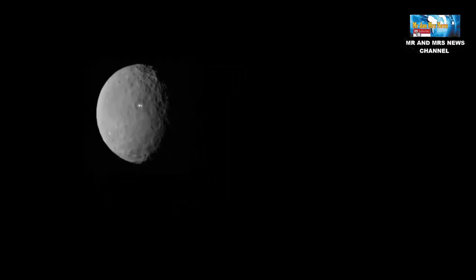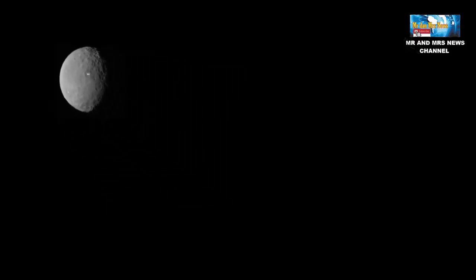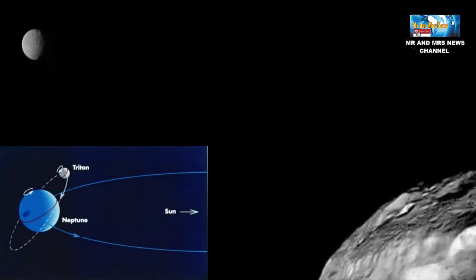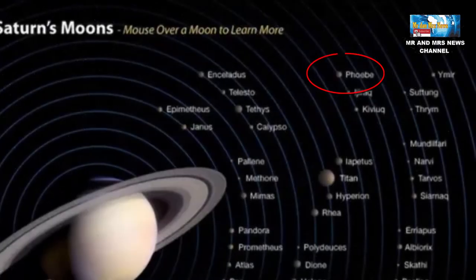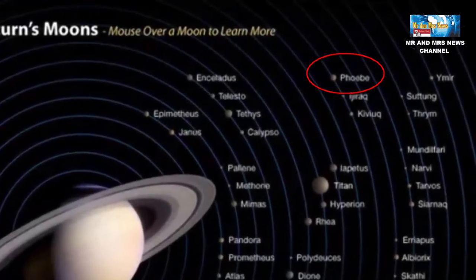Menariknya lagi, sekitar Sabuk Kuiper ini memiliki satelit yang disebut dengan Triton yang merupakan satelit Neptunus, dan Phoebe yang merupakan satelit Saturnus yang diperkirakan berasal dari Sabuk Kuiper.